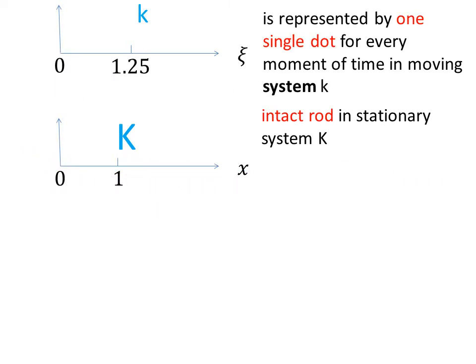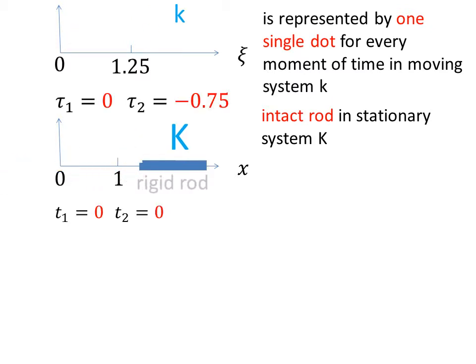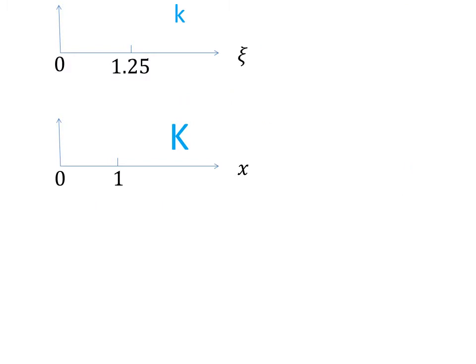K is represented by just one single dot for every moment of time in the moving system lowercase k. K is represented by a mirage entity in the moving system lowercase k, which has only one point existing at every moment of time.